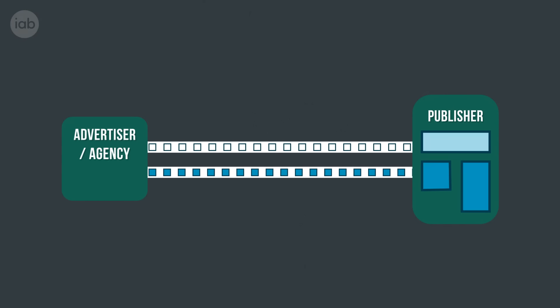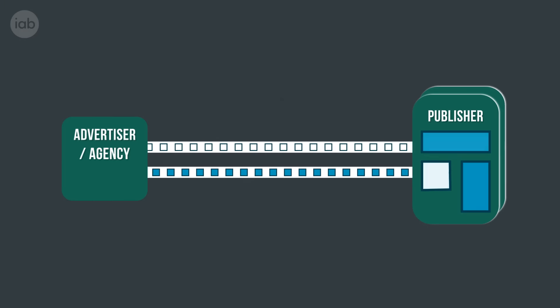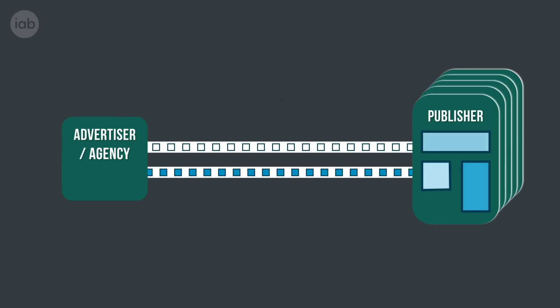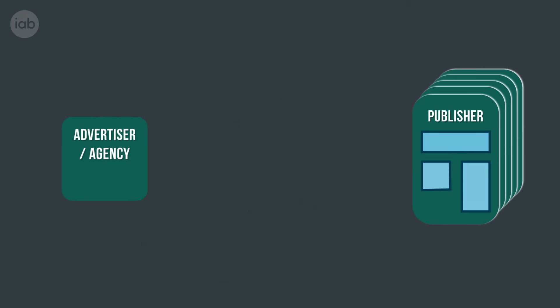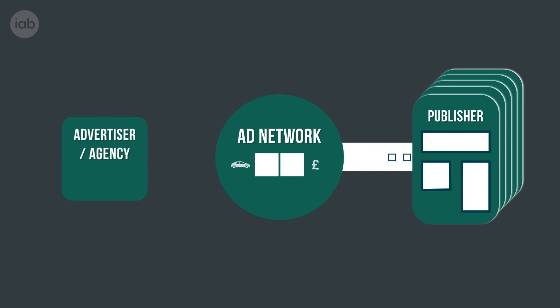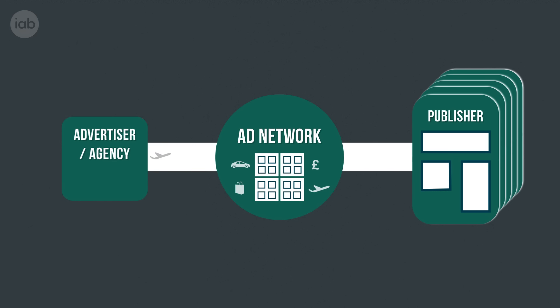As time went on, publishers began to create thousands of webpages, which led to millions and billions of unsold inventory. This gave rise to a new set of companies called the Ad Network. The Ad Network acted as a sales representative or broker, buying unsold or remnant inventory from the publisher, applying technology, aggregating the audiences, and selling packaged inventory on to the buyer, making it easier for them to target who they wanted.